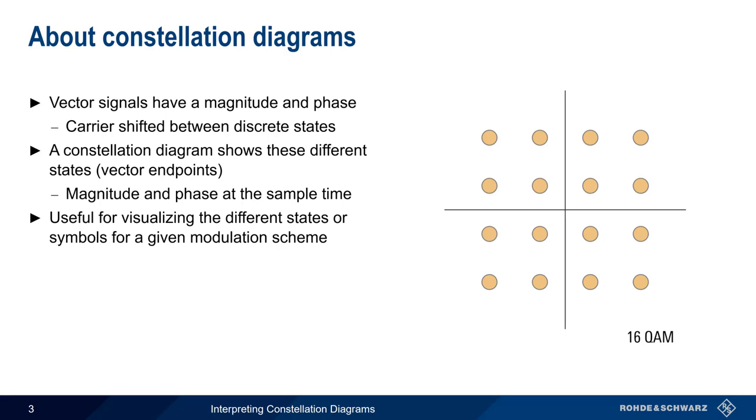And as we're about to see, constellation diagrams are also very useful in troubleshooting issues affecting modulation accuracy. By visually inspecting the constellation diagram of a received signal, we can often determine the cause or causes of deviations from the ideal or reference constellation points.